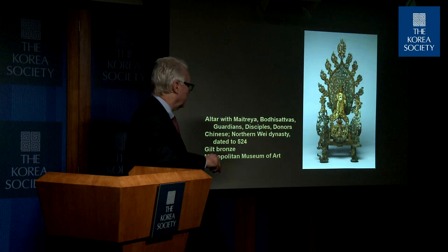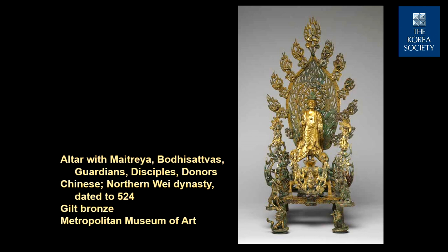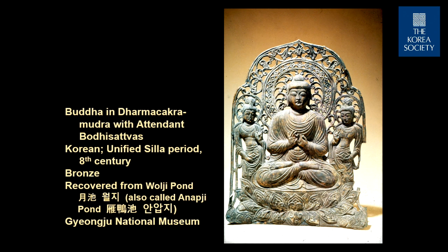Here is a very elaborate Chinese example dated to 524 by inscription. You have the Buddha in the center, attendant Bodhisattvas, guardian figures, and angelic figures. This is one of the very few of these gilt bronze altarpieces that remain intact — in height about two feet, a spectacular example. Korean altarpieces would have been similar originally. Here is a gorgeous one from Korea from the 8th century: a Buddha showing the turning of the wheel of the law, preaching the first sermon — you would recognize the mudra — with two slightly smaller Bodhisattvas on either side, and a beautiful mandorla, which is simply a full body halo.